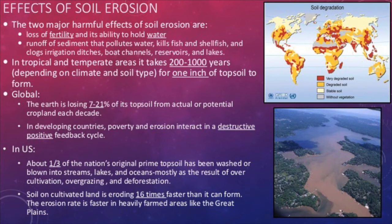How does this impact us? Mainly in agriculture. With the soil goes nutrients, dissolved gases, and water necessary for plant growth. It can lead to pollution as well, as it carries these things to nearby waterways where they shouldn't be. It can take hundreds of years to naturally replace an inch of soil that can easily be stripped away with a single flooding event. Globally, the earth is losing 7–21% of its topsoil each decade due to erosion. In the United States, about a third of the nation's topsoil has been swept away due to improper land management. In agricultural areas, the soil is being stripped away 16 times faster.